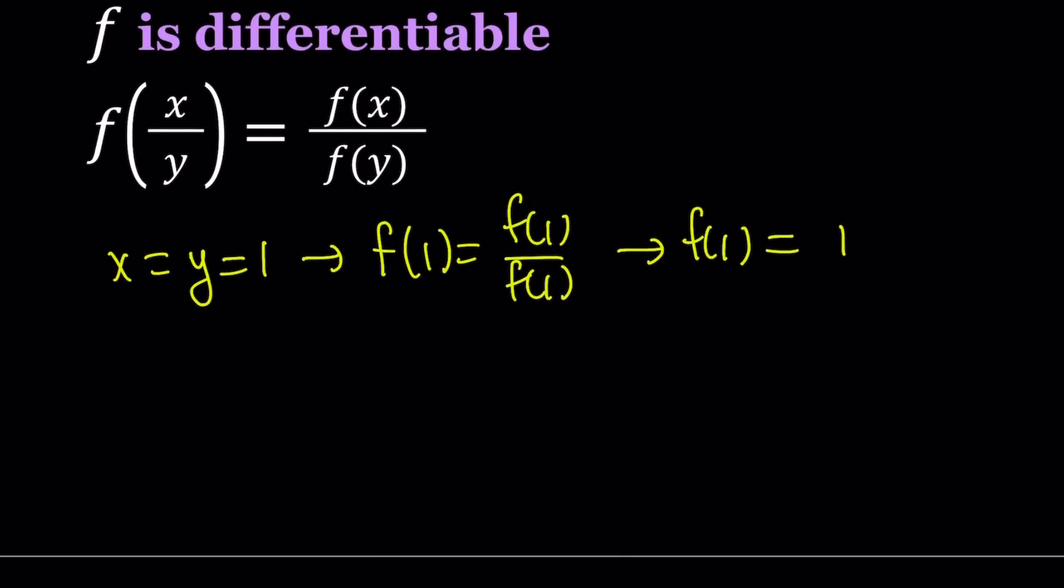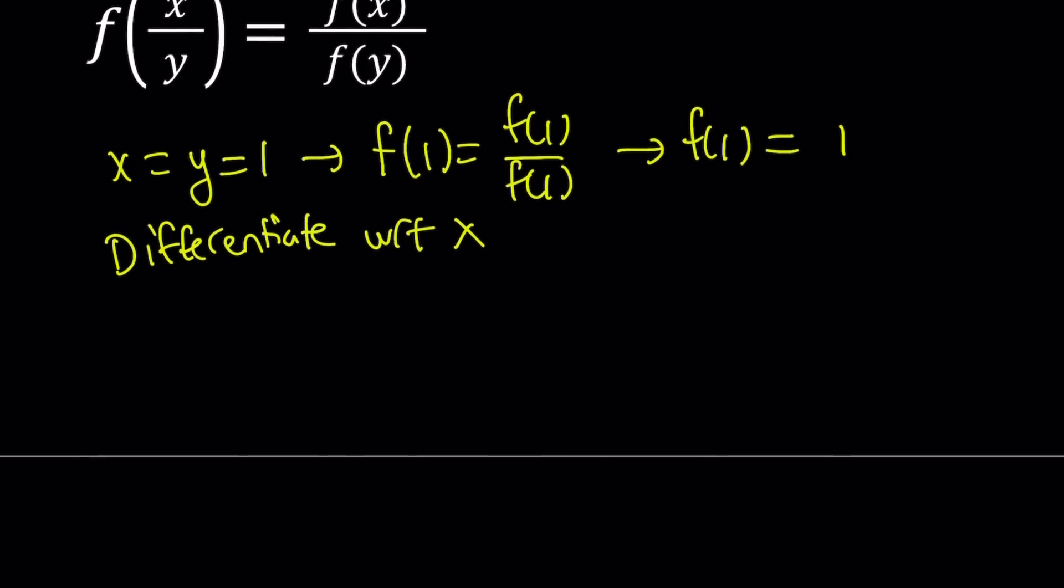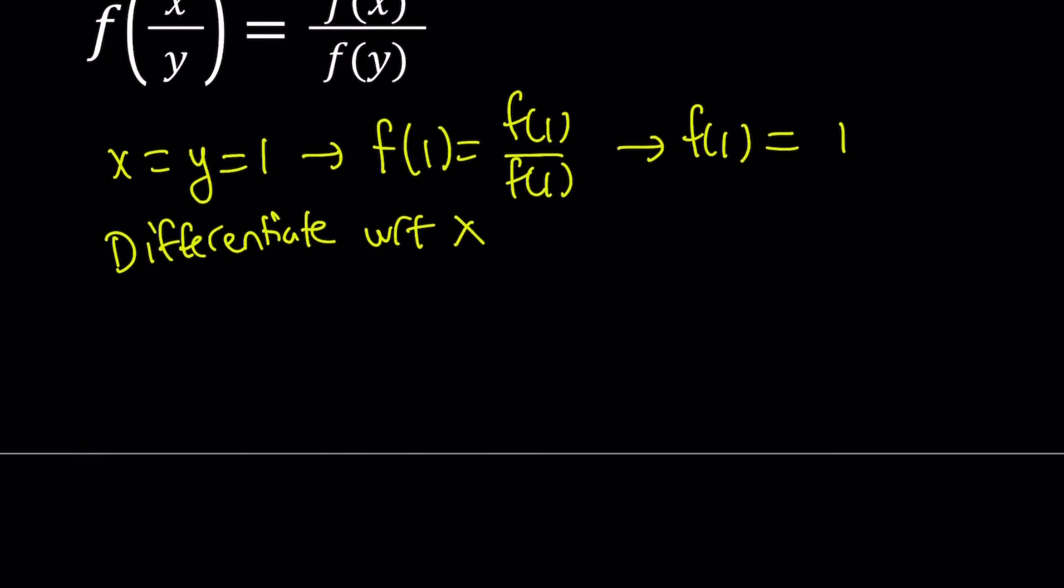Now we know that f of 1 is equal to 1. Let's go ahead and use differentiation. I'm going to differentiate both sides with respect to x. Since y is a constant, it's just going to be f of x divided by a constant.